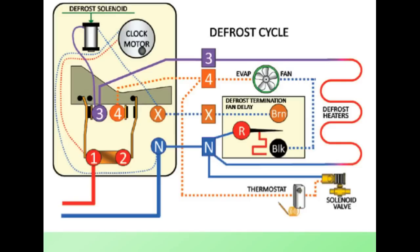Quick review of the defrost cycle. We're in the defrost cycle - clock motor's humming along, defrost solenoid has 115 volts but no neutral, evap fan has no power and is off, solenoid valve has no power and is closed, defrost heaters are on, and we are melting the ice off of the coil.